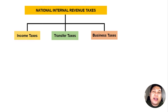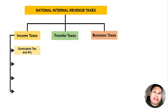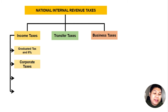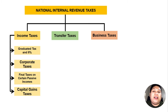Under income tax, we have four types: the graduated tax, which is tabular, and the eight percent optional rate — these are applicable only to individual taxpayers. We also have corporate taxes, final taxes on certain passive incomes, and capital gains taxes. These four taxes fall under income taxes, which we have discussed in previous video lectures.